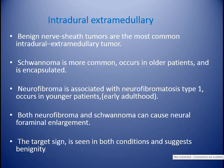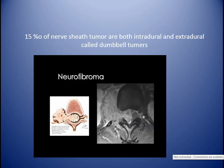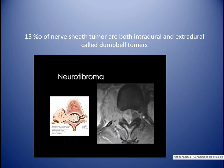Intradural extramedullary lesions: the most important are nerve sheath tumors, which are the most common. Schwannoma is more common and occurs in older patients. It is difficult to differentiate between schwannoma and neurofibroma on radiographic imaging alone. Schwannoma is encapsulated, while neurofibroma is associated with neurofibromatosis type 1 and occurs in younger patients. Both can cause neuroforaminal enlargement, and target sign — central hypointensity on T2-weighted image — is seen in both conditions and suggests benignity. 15% of nerve sheath tumors are both intradural extramedullary and extradural, called dumbbell tumors. The axial image shows widening of the neural foramina.